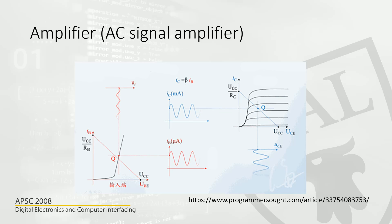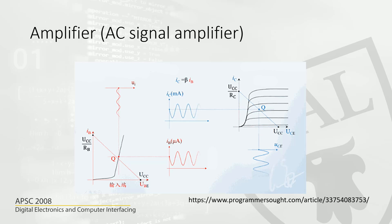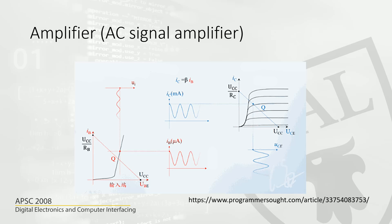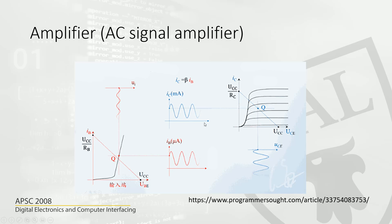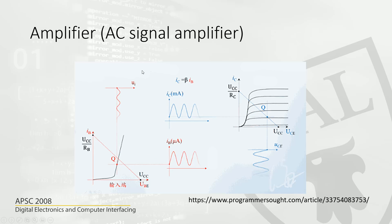The gain is typically in the range of 100 to 300, meaning if you apply 10 microamperes at the base, you get 100 times more current at the collector. That's what an amplifier does. You can connect multiple transistors to get more amplification — this is called a Darlington pair, where transistors are used in pairs for greater amplification.